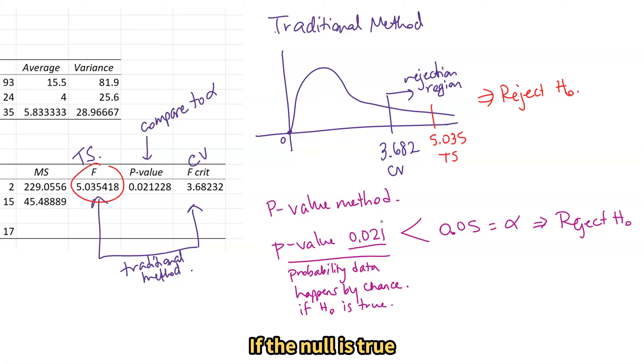If the null is true, the probability that the data given happens by chance is very small .021. Since it's too small, we end up rejecting the null.